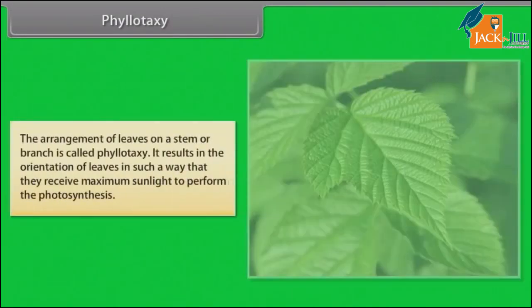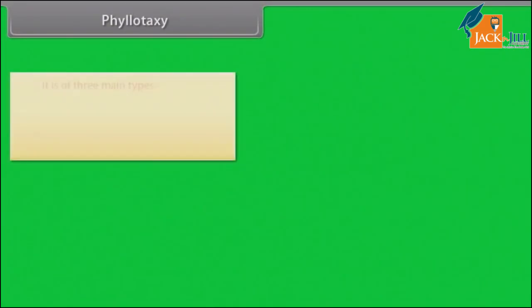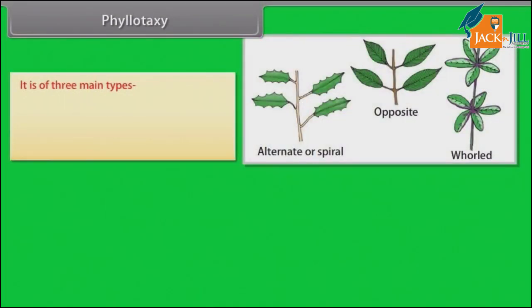The arrangement of leaves on a stem or branch is called phyllotaxy. It results in the orientation of leaves in such a way that they receive maximum sunlight to perform photosynthesis. It is of three main types.